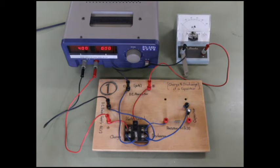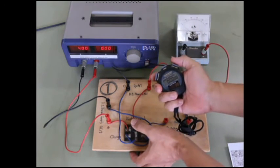Next, we will measure the value of the current over time while it is discharging. Turn on the switch on the discharge side and start the stopwatch at the same time. Like this. One, two, three.